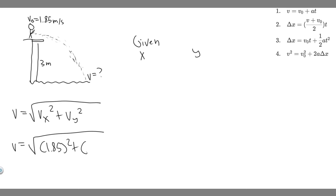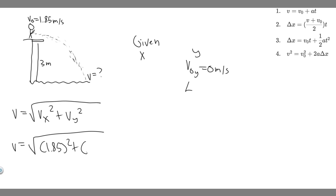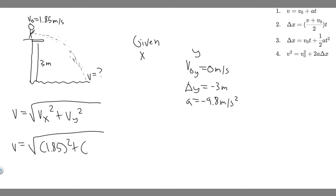For the y-direction: since she's going off horizontally, the initial velocity in y is zero — there's no vertical velocity at the start. The change in y from the board to the water is 3 meters, but since she's going down, Δy = −3 meters (up is positive, down is negative). The acceleration in y is −9.8 m/s², the acceleration due to gravity, negative because it's directed downward.